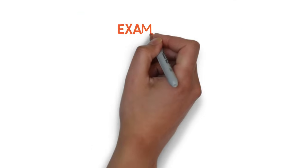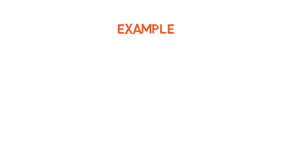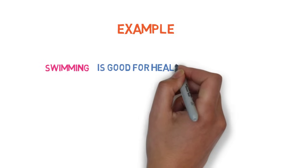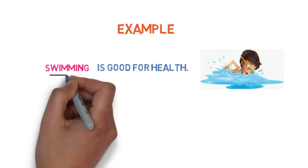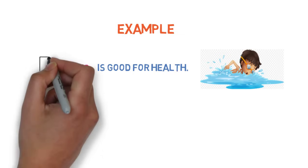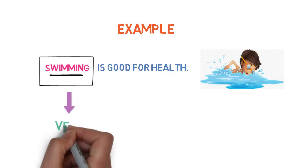Let's look into an interesting sentence example now. Swimming is good for health. Here, what is the subject? It is swimming. Is it a noun or pronoun? No, it's a verb.